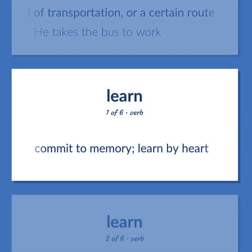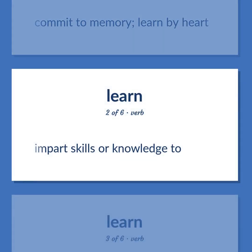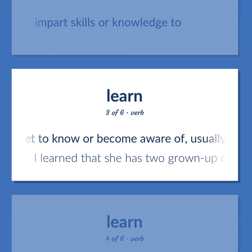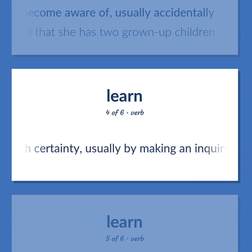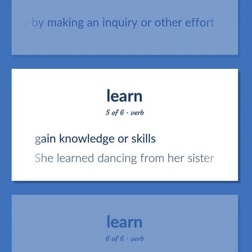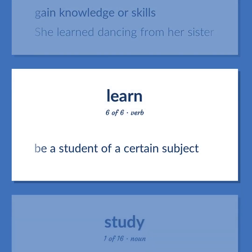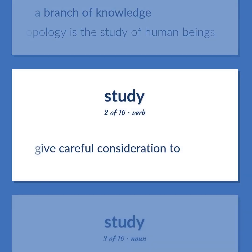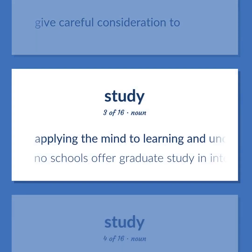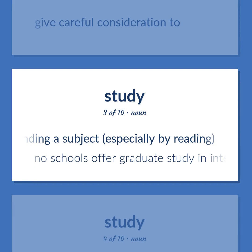Learn: commit to memory; learn by heart. Impart skills or knowledge to. Get to know or become aware of, usually accidentally — I learned that she has two grown-up children. Find out, learn, or determine with certainty, usually by making an inquiry or other effort. Gain knowledge or skills — she learned dancing from her sister. Be a student of a certain subject. Study: a branch of knowledge — anthropology is the study of human beings. Give careful consideration to. Applying the mind to learning and understanding a subject, especially by reading — no schools offer graduate study in interior design.